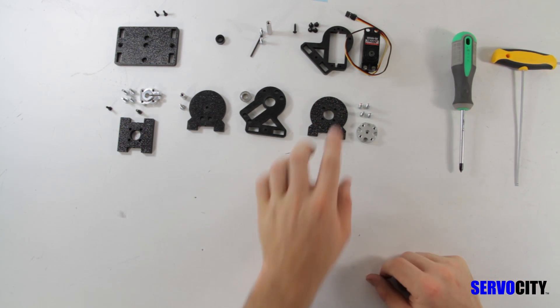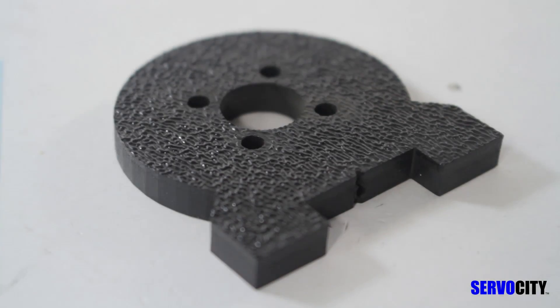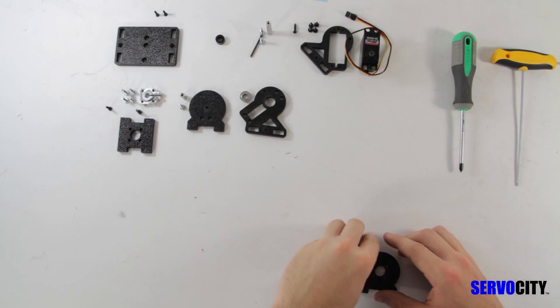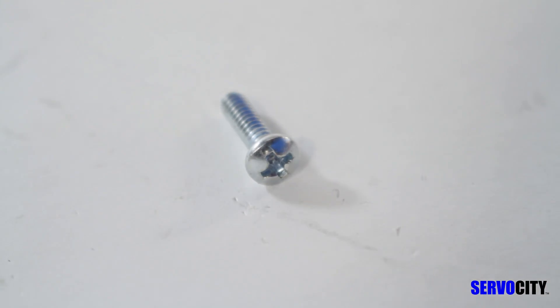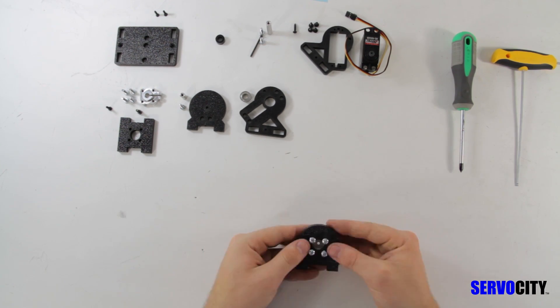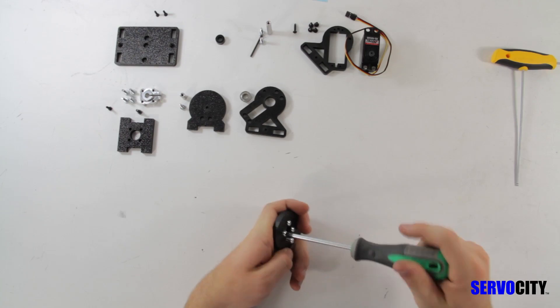First, take the round ABS plate that has the larger hole in it, the aluminum servo horn and four of the 6-32 by 1/2 inch pan head machine screws. Fasten the aluminum servo horn to the smooth side of the ABS plate using the pan head screws.